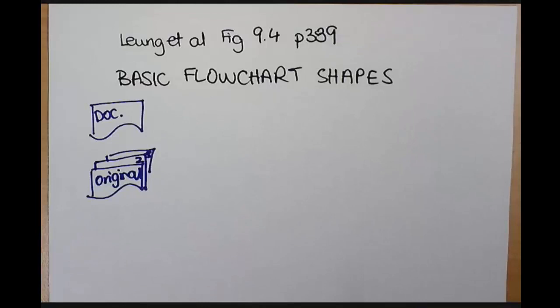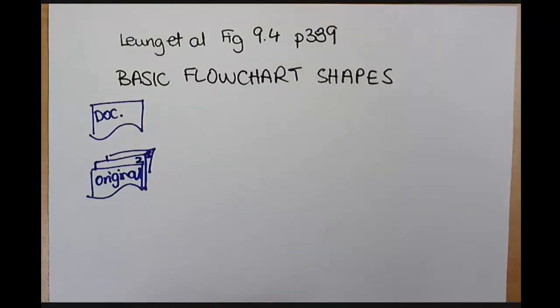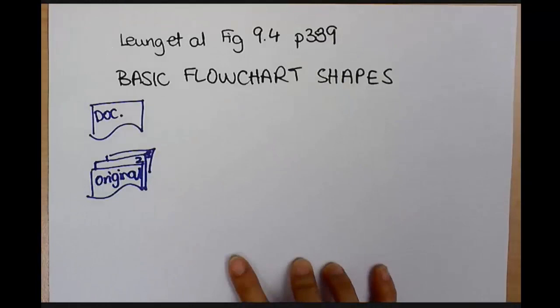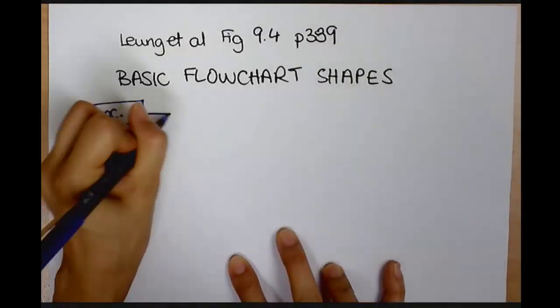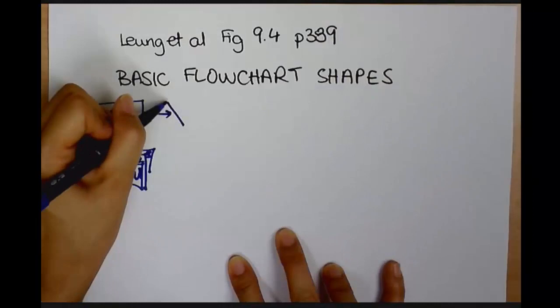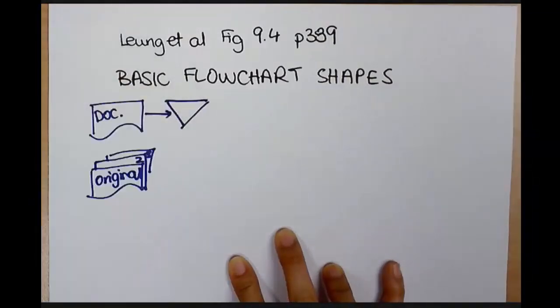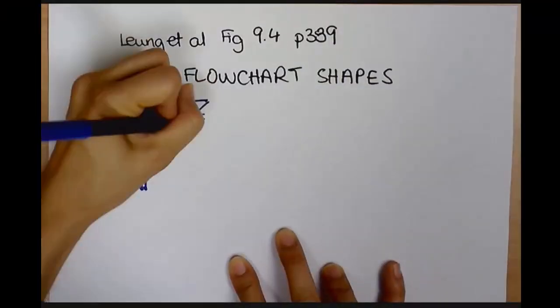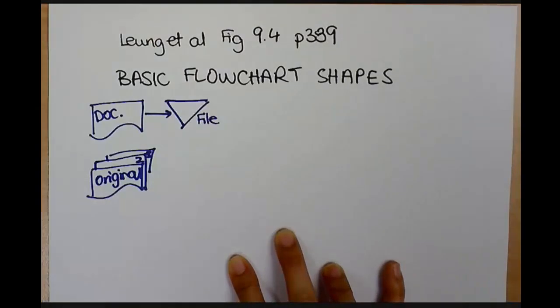Another thing we're going to use is we're going to talk about where documents get stored. So we know for most organisations as part of internal controls, documents need to get stored somewhere. And they typically get stored in files. So the upside down triangle is our file.